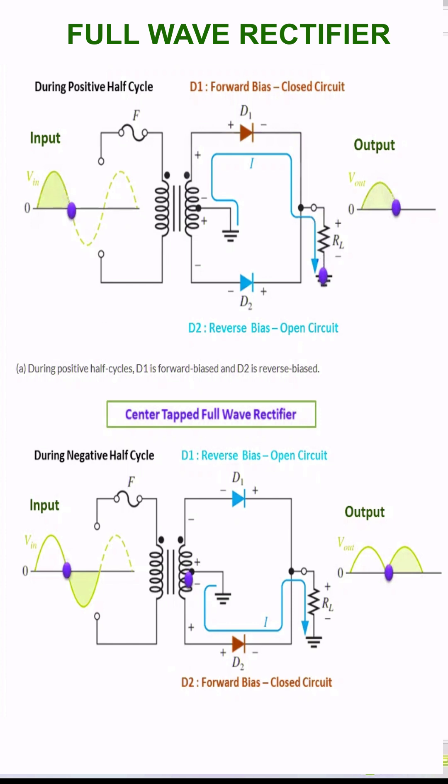During the positive half cycle of the alternating current, the top half of the secondary winding becomes positive while the second half of the secondary winding becomes negative.